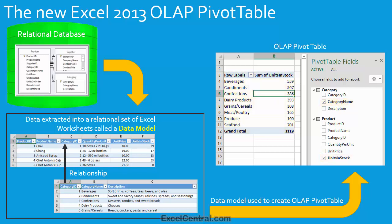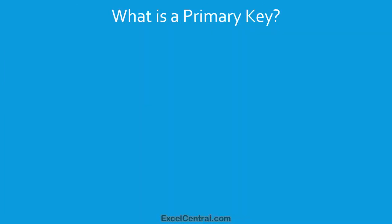Now that you can see the big picture of how a data model is used to create an OLAP pivot table, I'm going to move on to the subject matter of this lesson, and that is to understand the concept of relationships between tables. The first key concept to understand is the concept of the primary key.